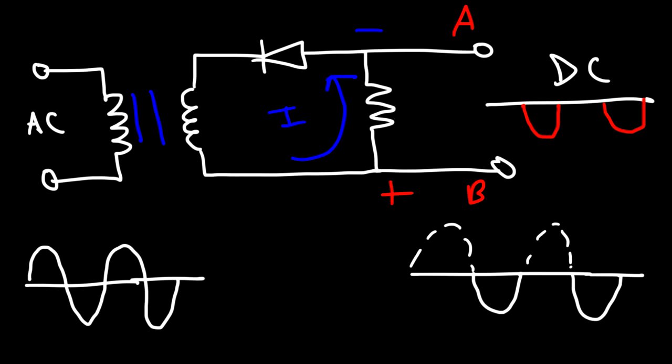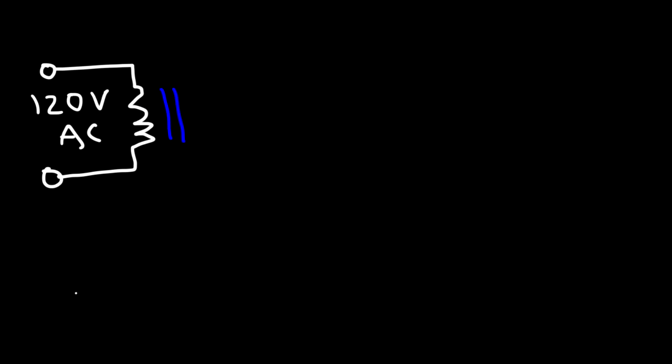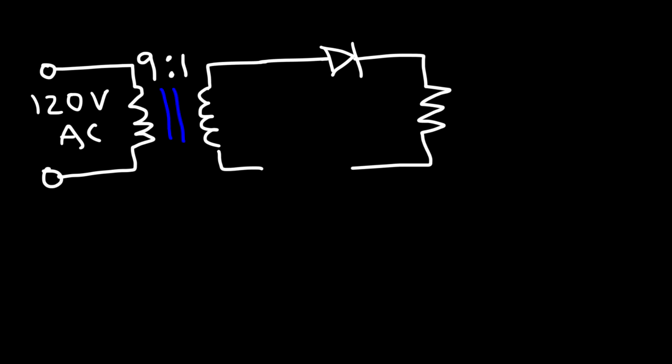That's the basic idea behind a half-wave rectifier: you're basically eliminating half of the AC signal and turning it into a pulsating DC signal. Now let's work on a problem with some calculations. Let's say the input voltage is 120 volt AC — that is the RMS voltage — applied to the primary side of the transformer. The ratio of the primary turns to the secondary turns is 9 to 1. Then we have our diode with a resistor, and the voltage drop of the diode is 0.7 volts. Go ahead and calculate the average DC voltage across the resistor.